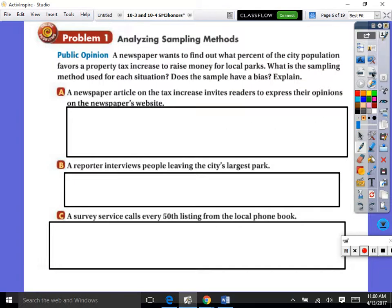So you have to be really careful and it's kind of murky on what's a good sample and what's not. So now what I want you to do is we're going to determine what kind of sampling method here. A newspaper wants to find out what percent of the city's population favors a property tax increase to raise money for local parks. What is the sampling method used for each situation and does the sampling have a bias to explain? So everybody read this and then you're going to tell me what sampling method they used here. A newspaper article on tax increase invites readers to express their opinions on the newspaper's website. A reporter interviews people leaving the city's largest park. A survey service calls every 50th listing from the local phone book. What kind of sampling method? Ready, go. Decide for all three of them.